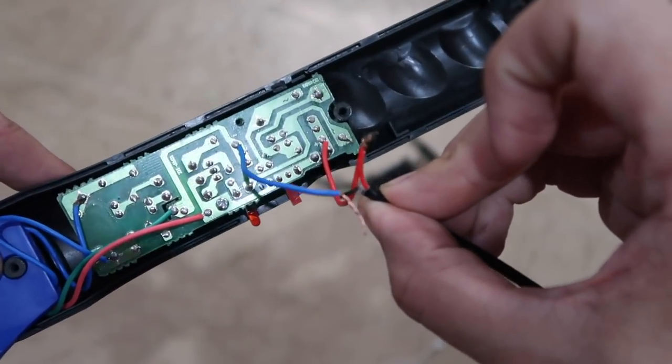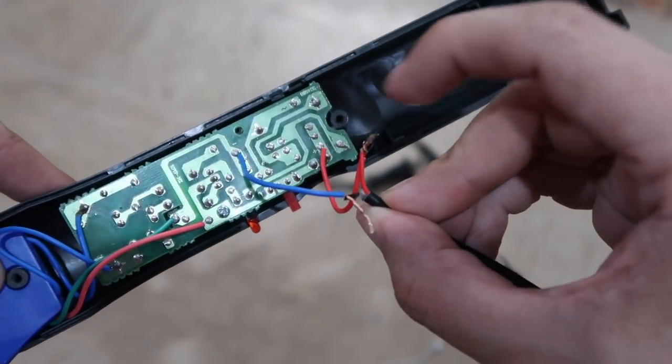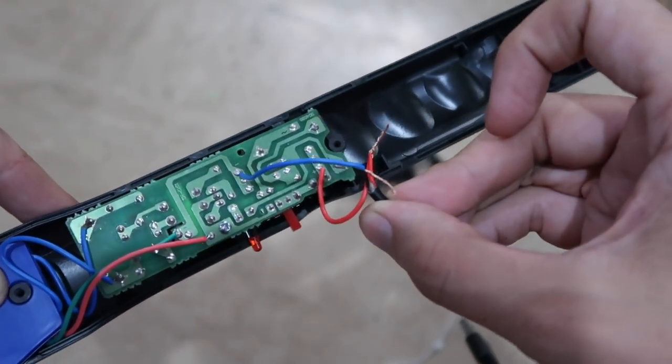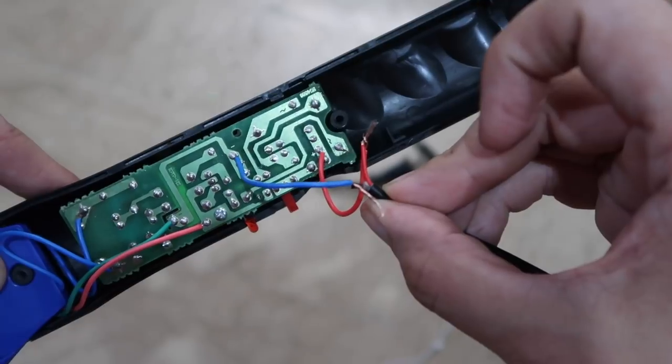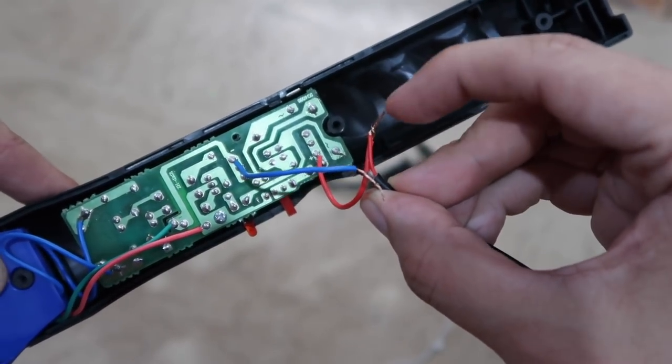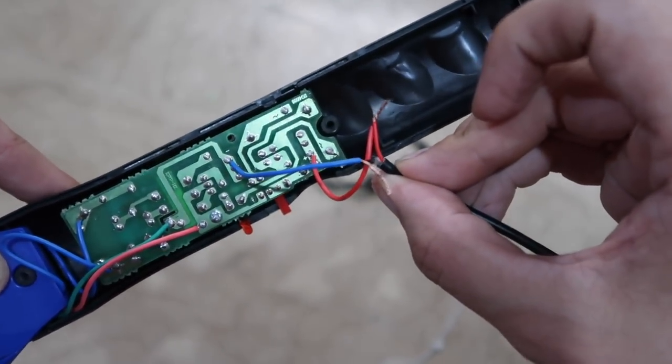Now if you have a soldering iron you could solder these wires together but if not you can just twist them together like I have here and that will be good enough for this application. Now of course we have to put some electrical tape around each one to make sure they won't short out against each other.